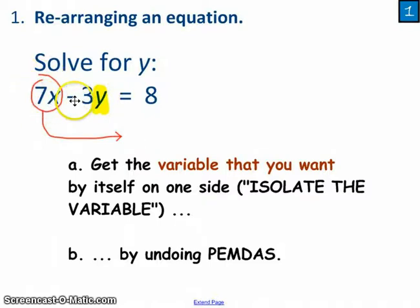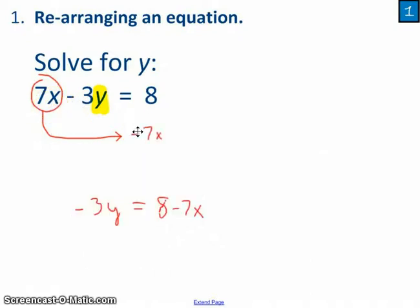So 7x, which had been added to the negative 3y, is now going to be moved over and subtracted away. Now I've got 8 minus that 7x, so what I'm left with is negative 3y equals 8 minus 7x. And what's left to do now is simply to divide by negative 3. Cancel those negative 3s out.